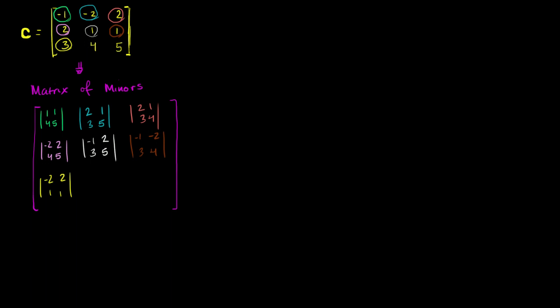Now let's move to this one — the middle column, bottom row. You have negative 1, 2, 2, 1. So we have the determinant of negative 1, 2, 2, 1.